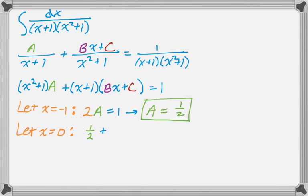0 plus 1 is 1, so 1 times the B term goes away, because B times 0 is 0, so really just plus C equals 1, so I have C equals 1 half.